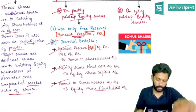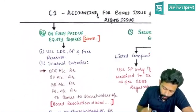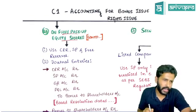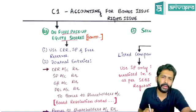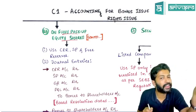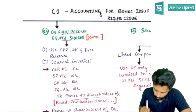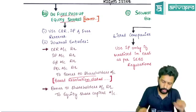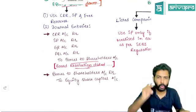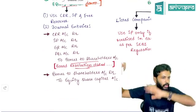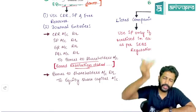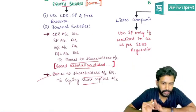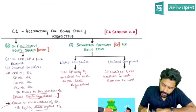For a normal bonus issue on fully paid up shares, the entry will be: CRR A/c debit, Securities Premium A/c debit, General Reserve or P&L A/c debit if required — to Bonus to Shareholders A/c. In the narration, write that it is a board resolution number dated. The second entry is: Bonus to Shareholders A/c debit to Equity Share Capital.